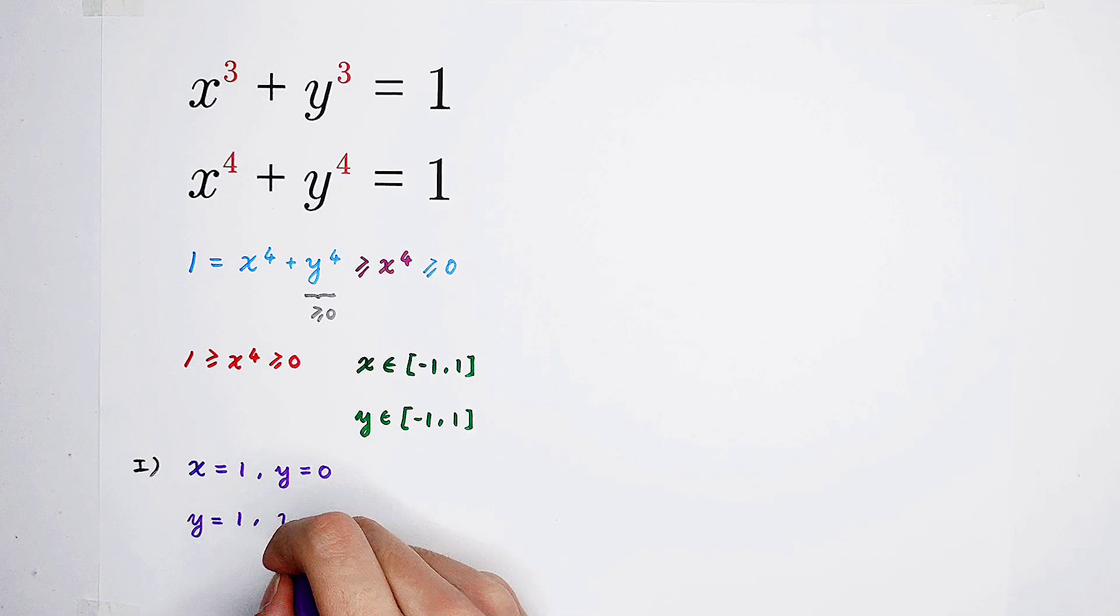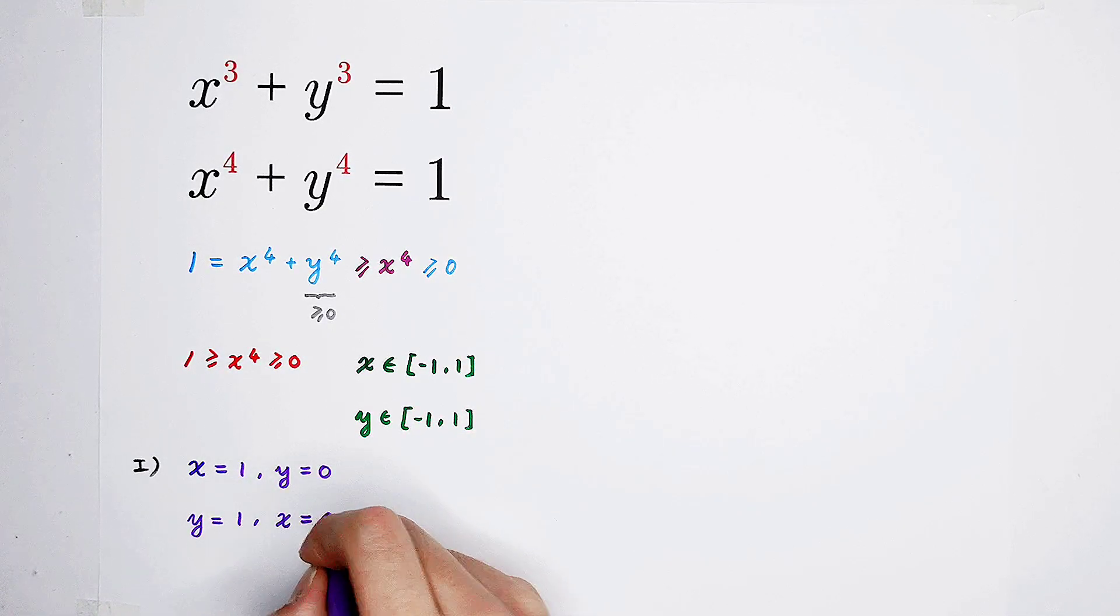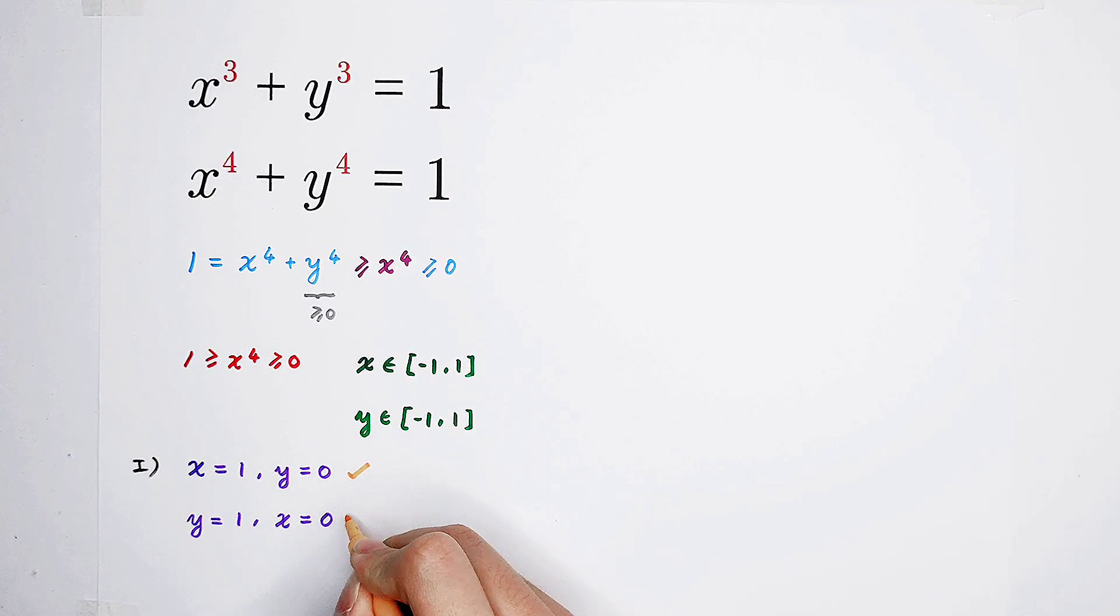just symmetric, x is 0. Y is negative 1, no solutions. One pair, two pairs. Okay.